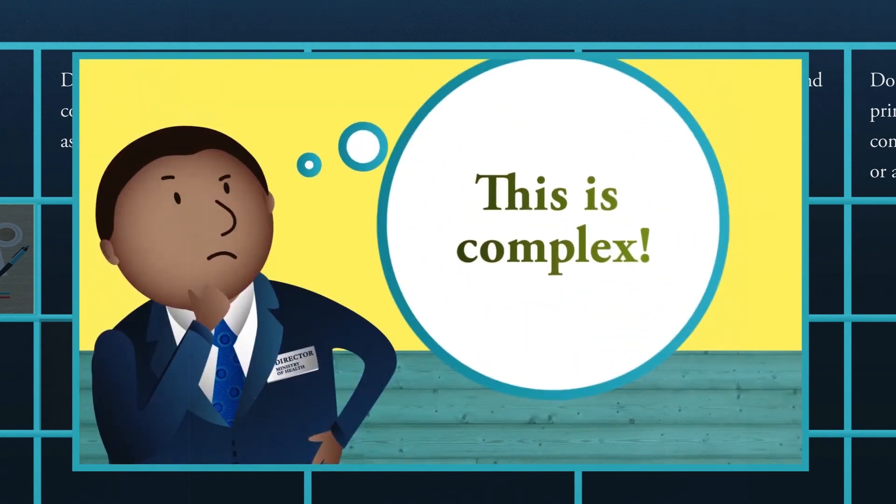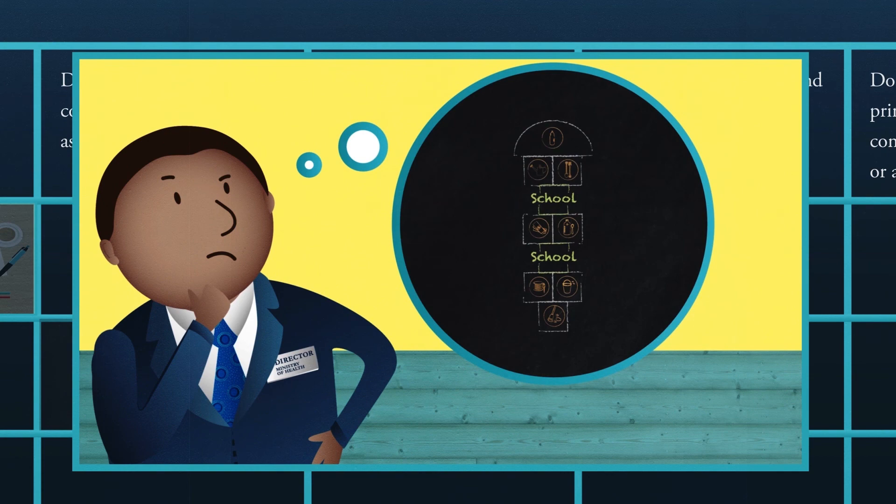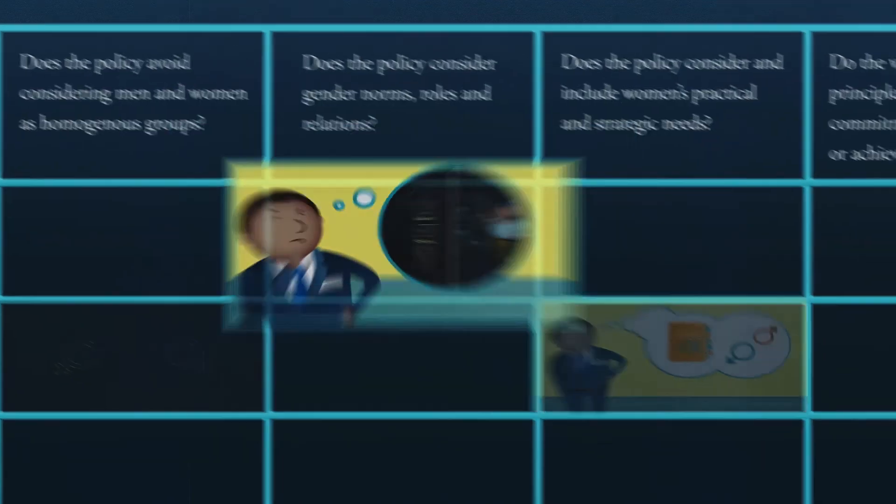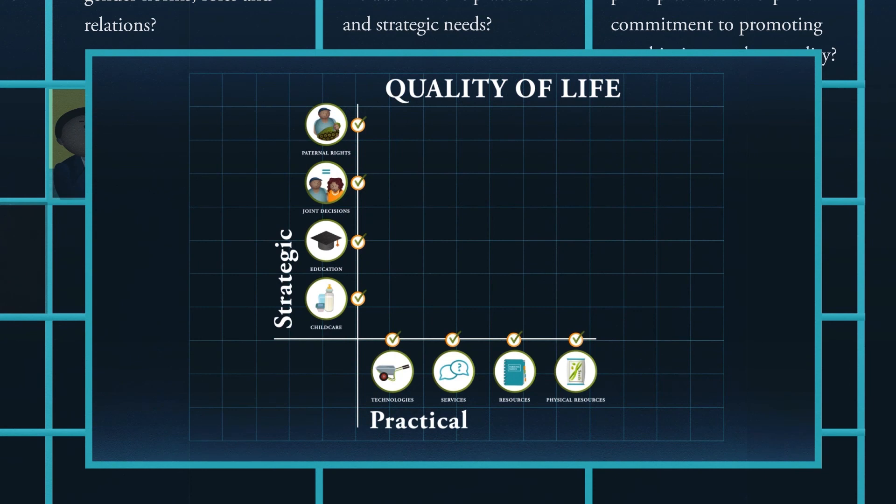By understanding gender norms, roles, and relations, Titus is able to challenge the ingrained beliefs that perpetuate gender inequality and constrain access to nutritious food for both men and women. Because Titus understands that gender is not just about women, he is able to genuinely understand the practical needs of men and women.